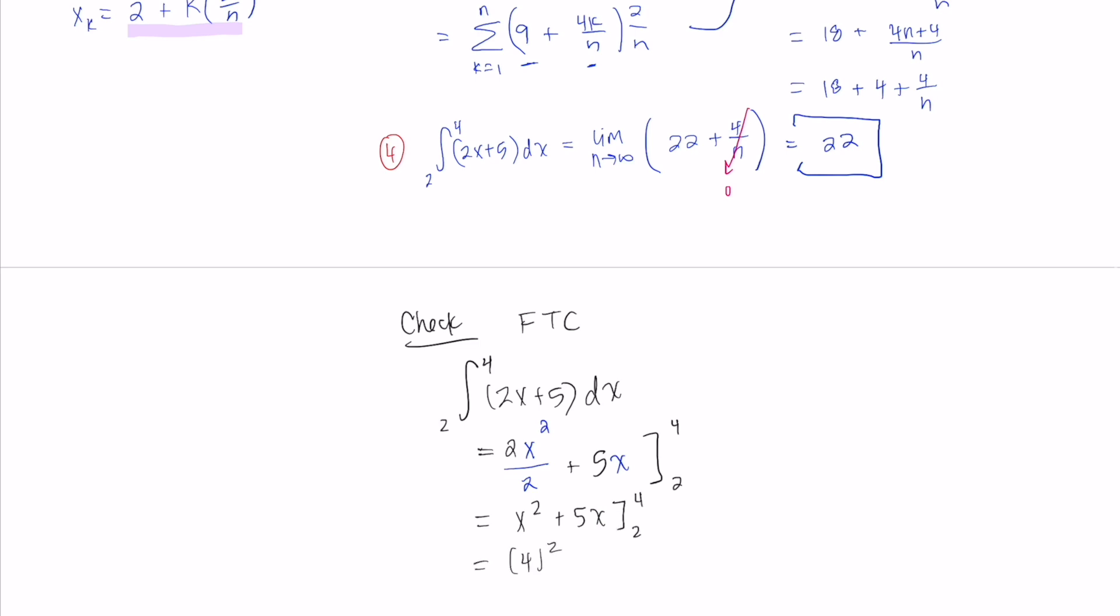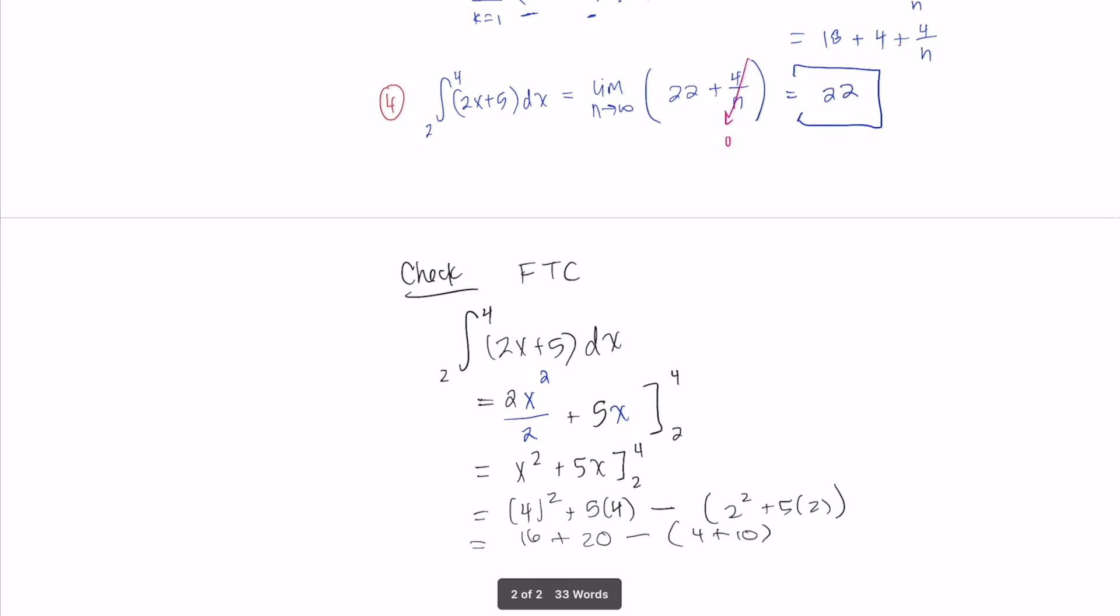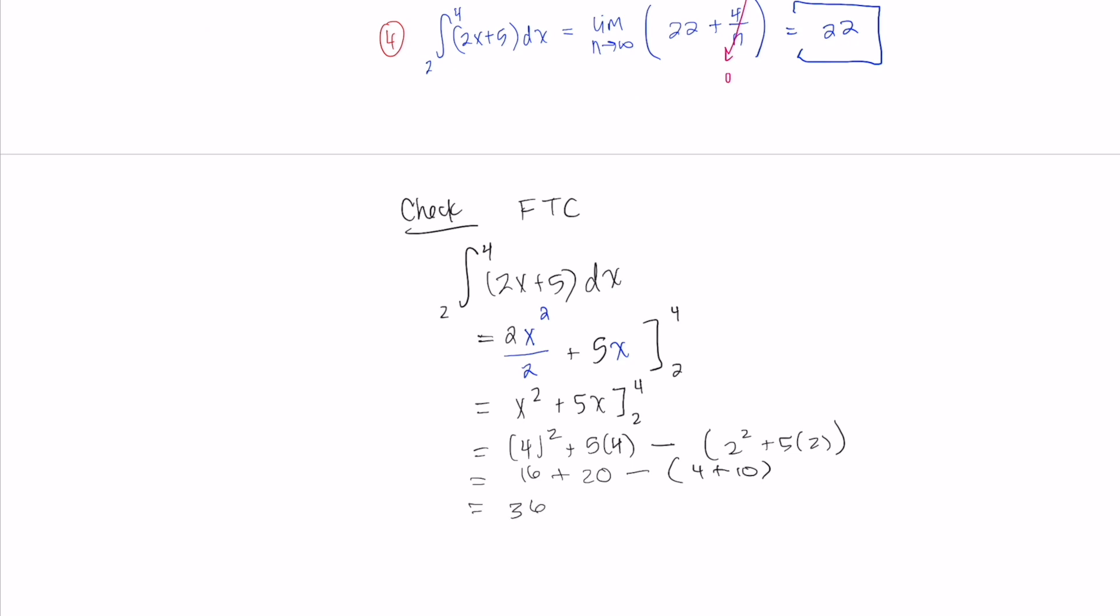And then this will be 4 squared plus 5 times 4 minus 2 squared plus 5 times 2. And then cleaning this up we get 16 plus 20 minus 4 plus 10. 36 minus 4 plus 10, that's 14. Beautiful! 36 minus 14 gives us 22, and we have the correct answer.